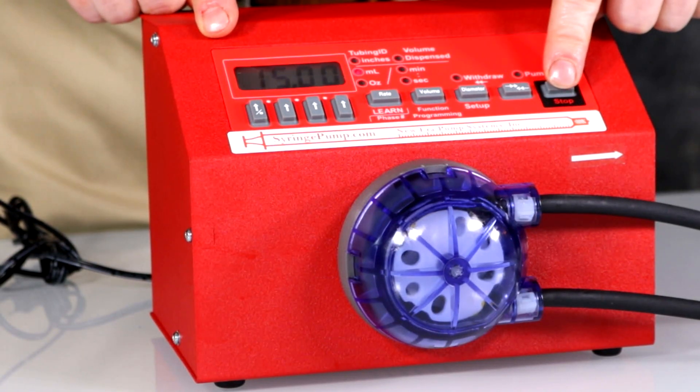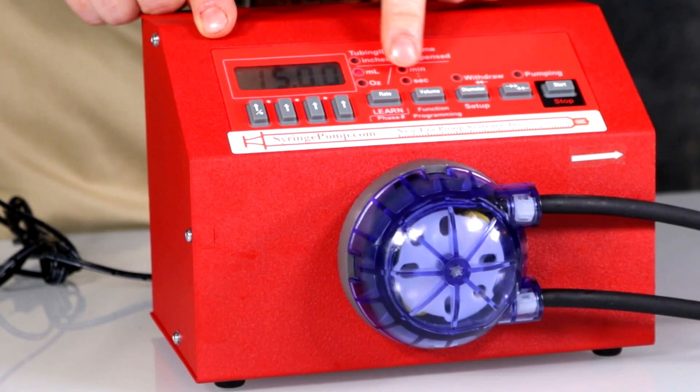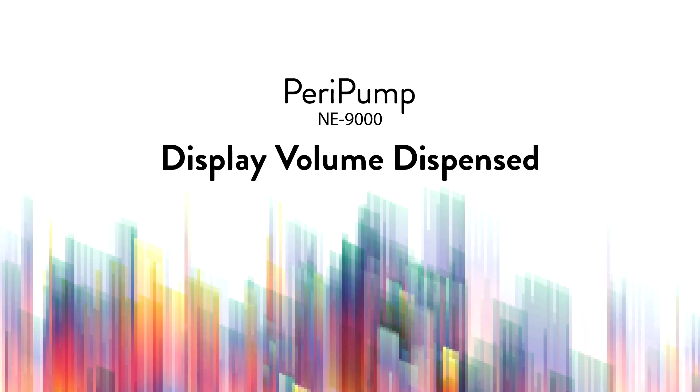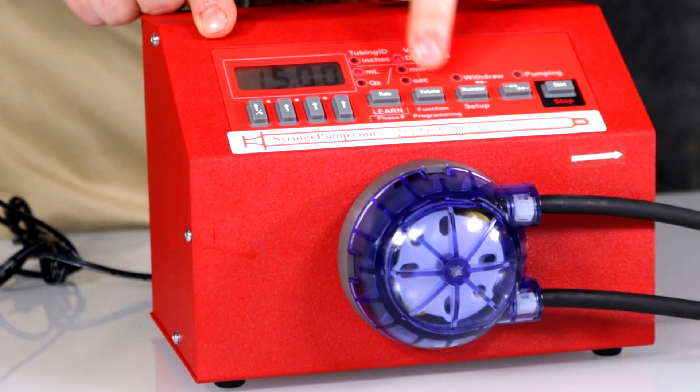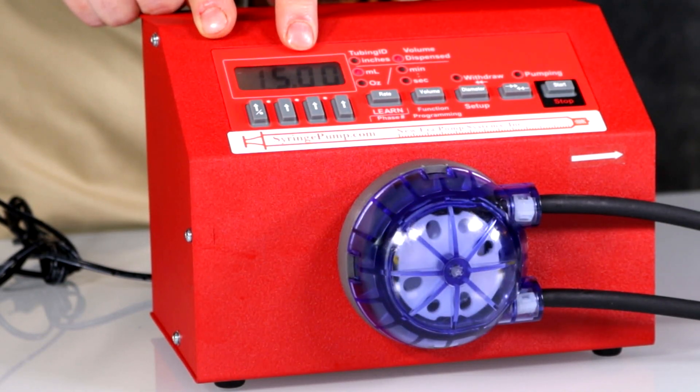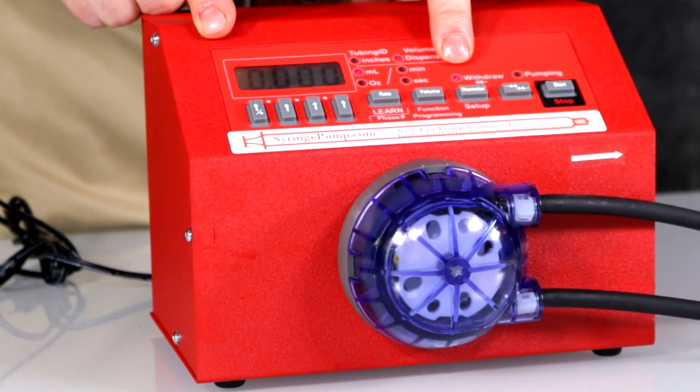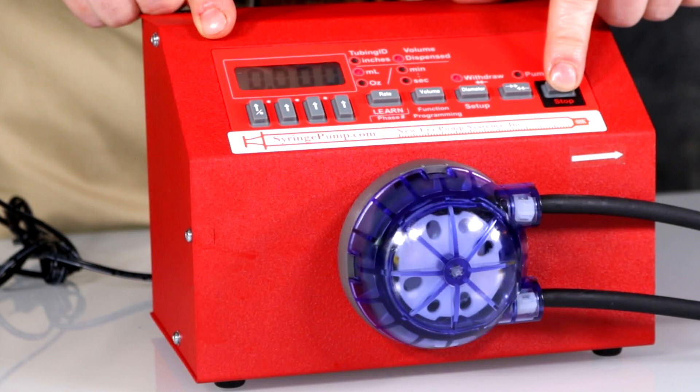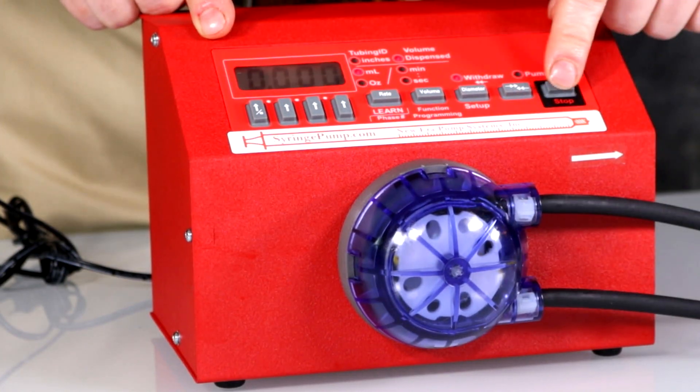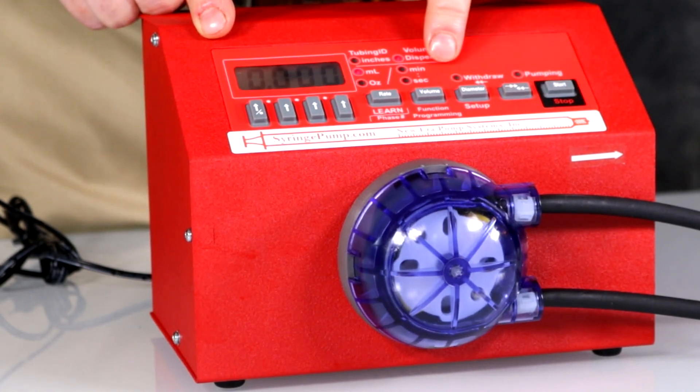Press start to run the pumping program. The pump stops when the volume target is reached. Display the volume dispensed. Press volume to display the volume dispensed. The pumping rate can be changed while pumping. When stopped, the pumping direction can be changed to withdraw. Press start to empty the tubing. Reverse process to infuse.